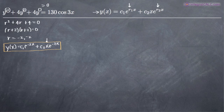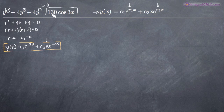Now, based on the right-hand side of the original equation, we need to find a particular solution. The way we're going to do it is using the method of undetermined coefficients. Basically, we're going to make a guess about the format of the right-hand side — 130 cosine of 3x — then derive that guess and plug it back into the left-hand side to see if we can match coefficients on both sides of the equation.